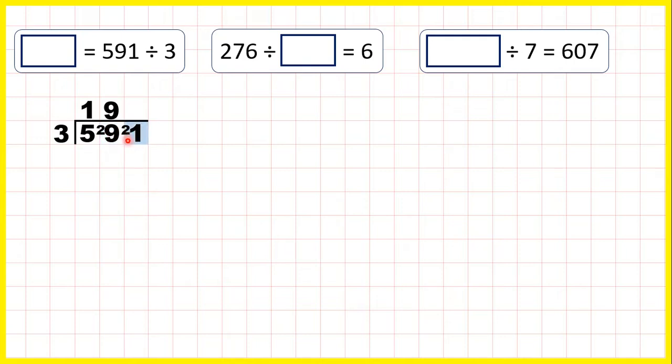So finally we have 21 divided by 3. That's exactly 7, because 7 times 3 is 21. So our answer is 197.